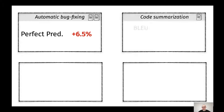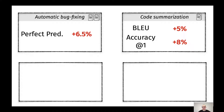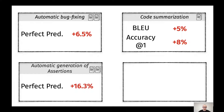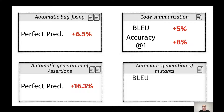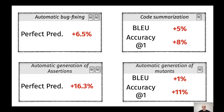When we consider the code summarization task, focusing specifically on the BLEU score, the T5 model improved over the baseline by 5%. When we consider the accuracy at 1, there is an improvement of plus 8%. Switching to the automatic generation of assertions, the improvements are even bigger — on average there is an improvement that bumps up to 16.3%. And finally, for automatic generation of mutants, we have a slight improvement for the BLEU score, but when we consider the accuracy at 1, namely the perfect mutants, the improvements are quite remarkable at plus 11%.